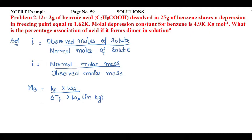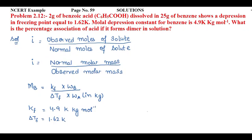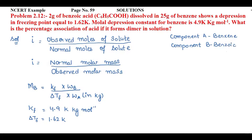Let's note the given values. First, Kf — the molar depression constant — is 4.9 Kelvin kg per mol. ΔTf — the depression in freezing point — is 1.62 Kelvin. We have two components: component A is benzene, and component B is benzoic acid.